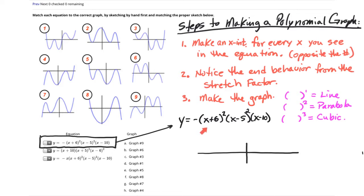So first, for the first parentheses I've got x plus 6, so I need to have a dot at negative 6. For the next parentheses with x minus 5, I need to have a dot at positive 5.